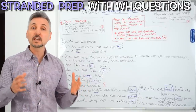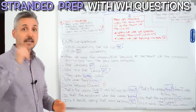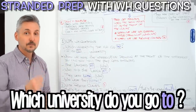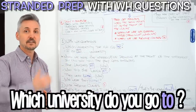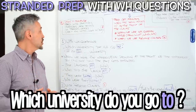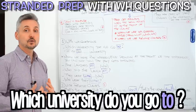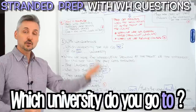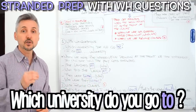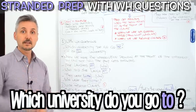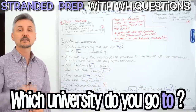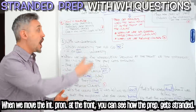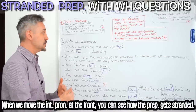So let's look at when we use WH question words, like in my example: "Which university do you go to?" — "to" is the preposition that is left behind, that is stranded. For example, "I go to Queen's University," "I go to UFT." So: which university do you go to? We have an example of stranded prepositions. When we move the interrogative pronoun to the front of the statement, you can see how the preposition gets stranded.